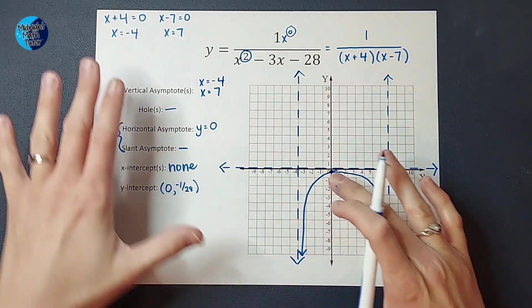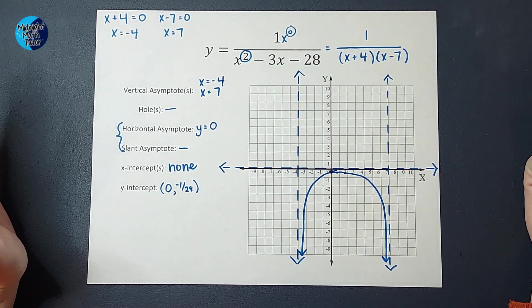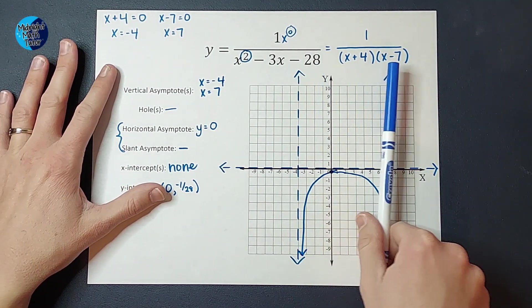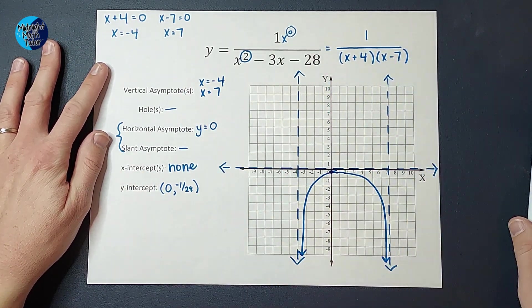Okay. I know it's going to go down because it can't go up. Because then I would cross the x-axis. Okay. Now, what? I have represented between these two asymptotes. But what about over here and over here?